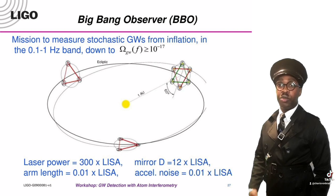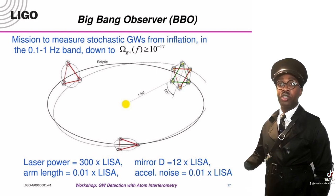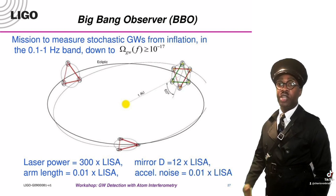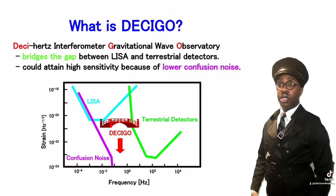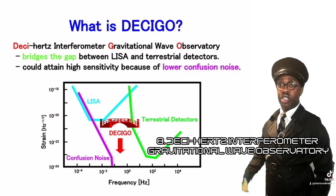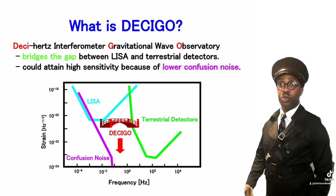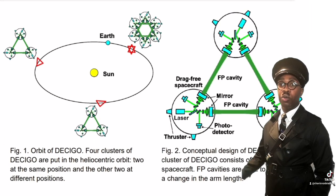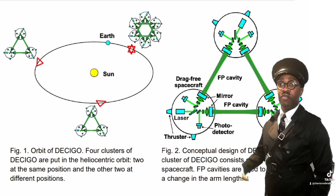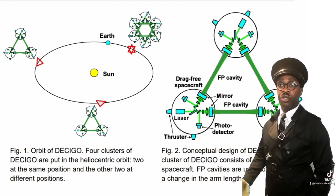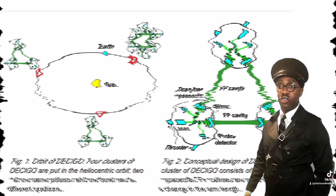The BBO detectors will be much more sensitive and approximately 100 times smaller than the LISA detector. DECIGO, known as the Deci-Hertz Interferometer Gravitational Wave Observatory, is a future Japanese space project that will operate in the 0.1 to 10 hertz frequency range, investigating primordial gravitational waves that could have been produced during the inflationary epoch that followed the formation of our universe.